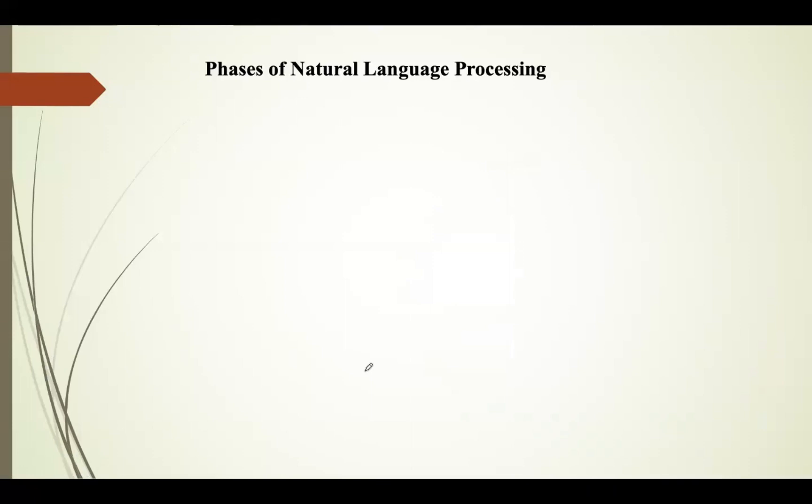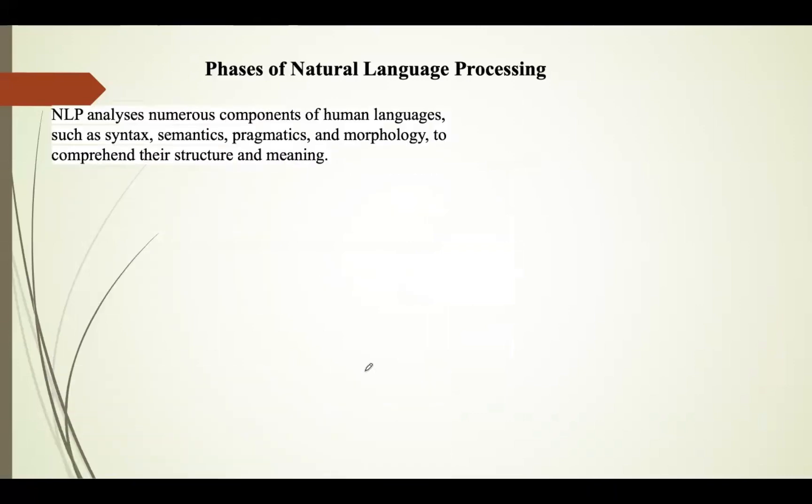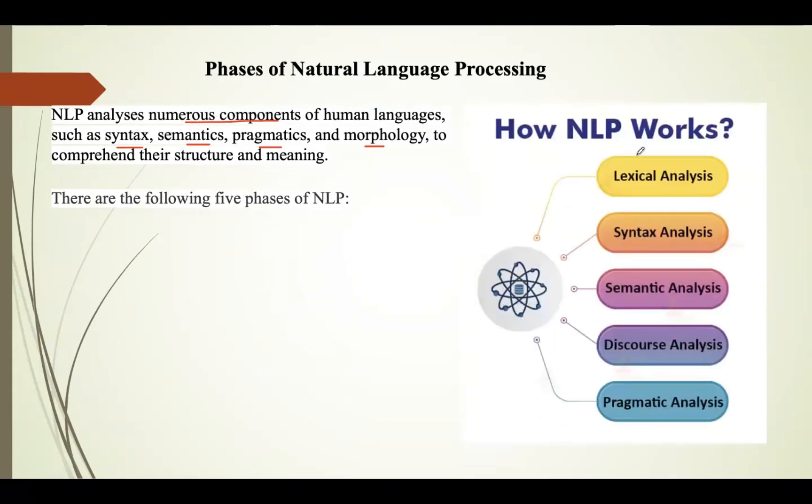In this lecture, let us discuss phases of natural language processing. Natural language processing is separated into five primary stages, starting with simple word processing and progressing to identifying complicated phrase meanings. NLP analyzes numerous components of human languages such as syntax, semantics, pragmatics, and morphology in order to comprehend their structure and meaning.